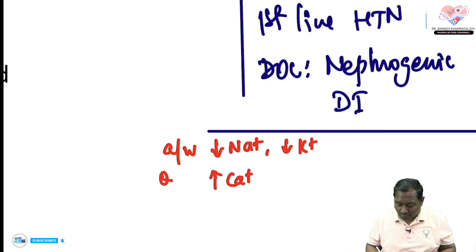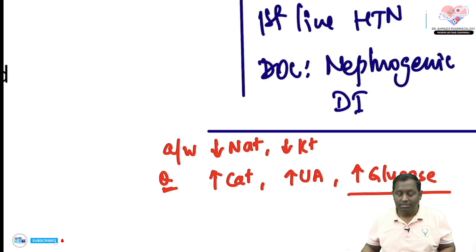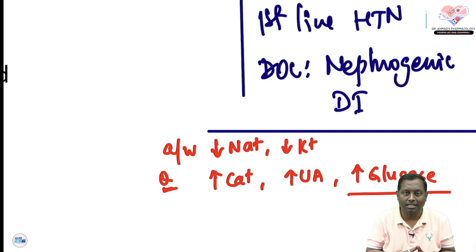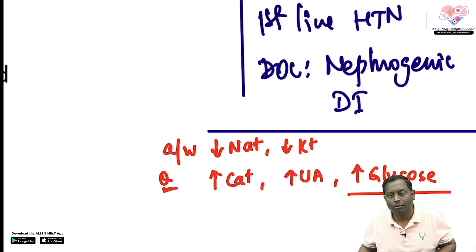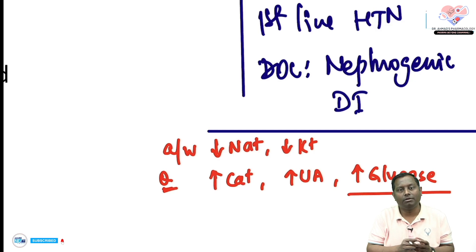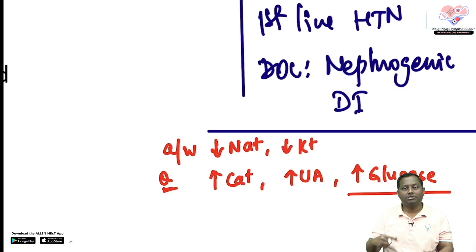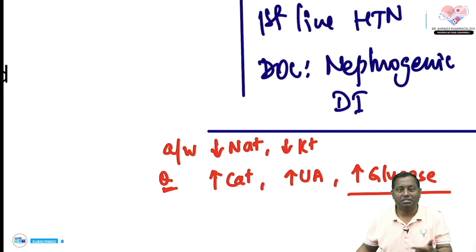Thiazide diuretics cause hypercalcemia, hyperuricemia, and hyperglycemia. The mechanism for hyperglycemia: insulin release from beta cells of the pancreas requires potassium. If the diuretic causes more potassium loss, the depolarizing potassium will be lesser, so insulin release from the beta cells will be compromised — this is why hyperglycemia occurs.